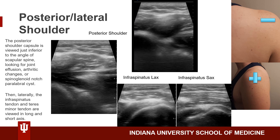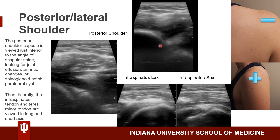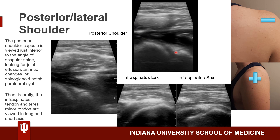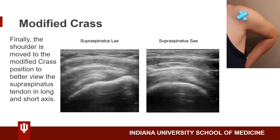We can also look at the shoulder posteriorly. This shows the humerus, the posterior joint, and the glenoid. This little triangle is the labrum of the shoulder. The infraspinatus muscle goes up over the top of the shoulder posteriorly, with the deltoid on top of that. This very small dark area is the glenohumeral joint. We can watch dynamically as the humerus rotates — you can see it rotating in the back of the shoulder. This shows the triangle of the labrum on top of the glenoid, the lateral shoulder, and the infraspinatus in long axis and short axis, as well as the modified crass position with the supraspinatus.